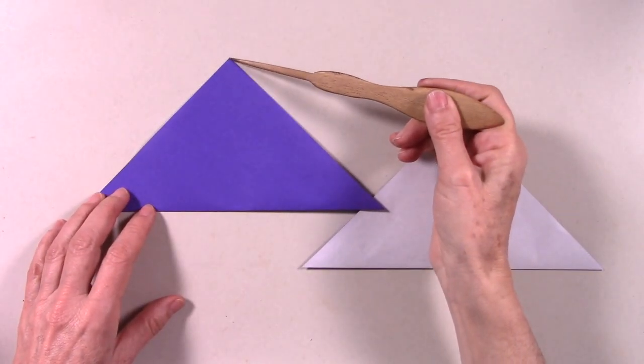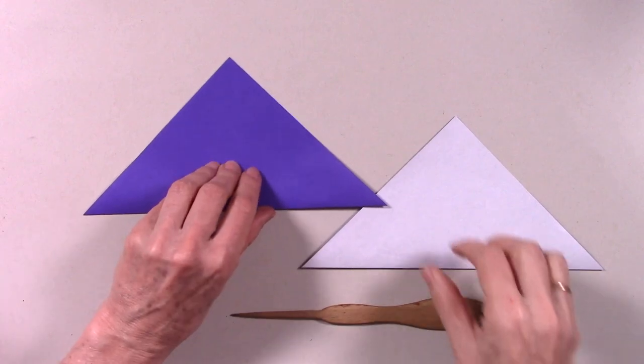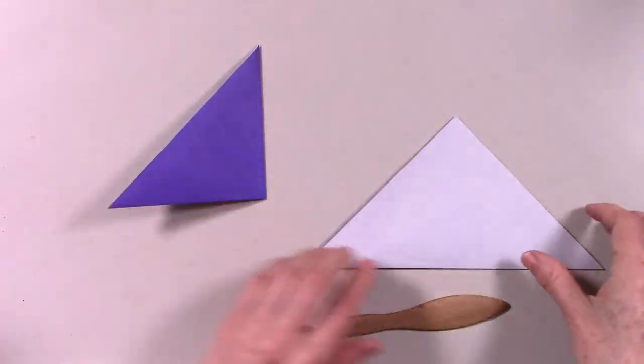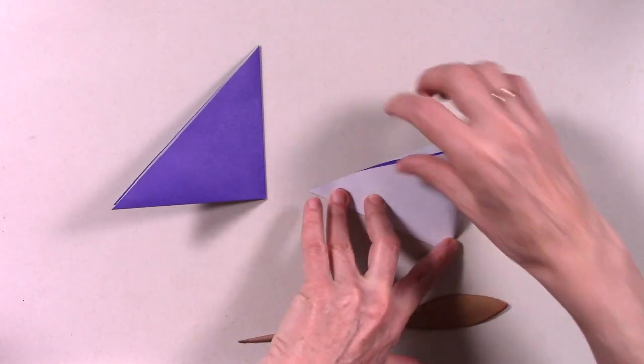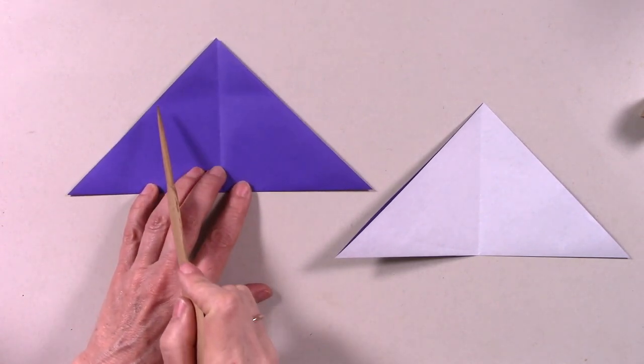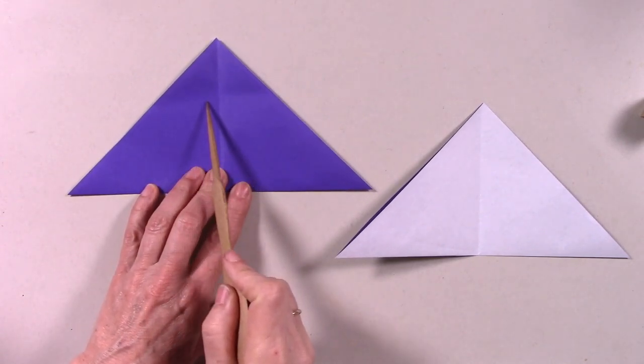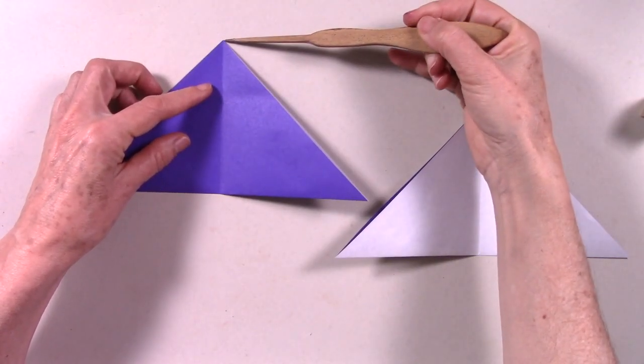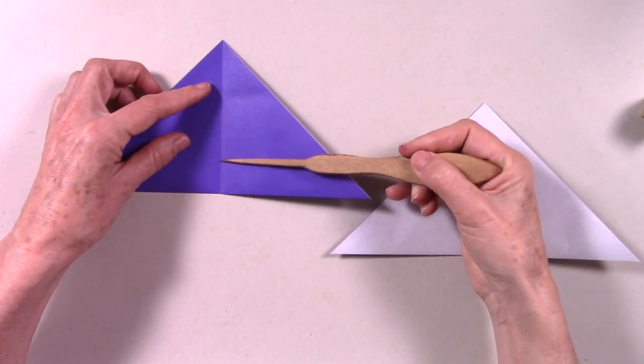We make a vertical valley fold at the center by bringing this point to match the vertical crease.